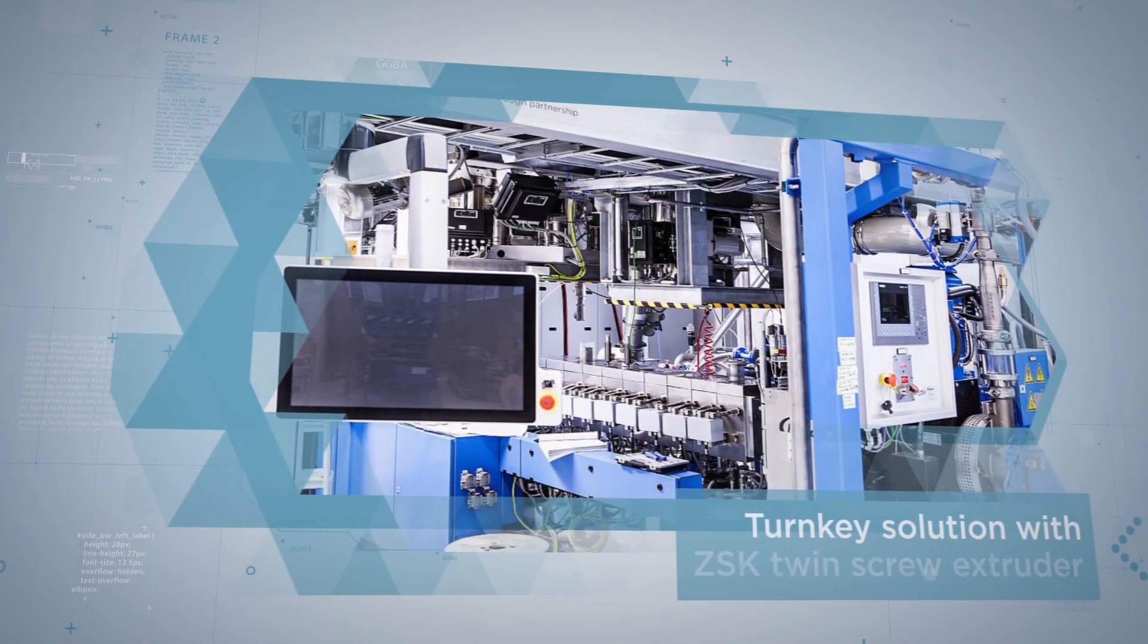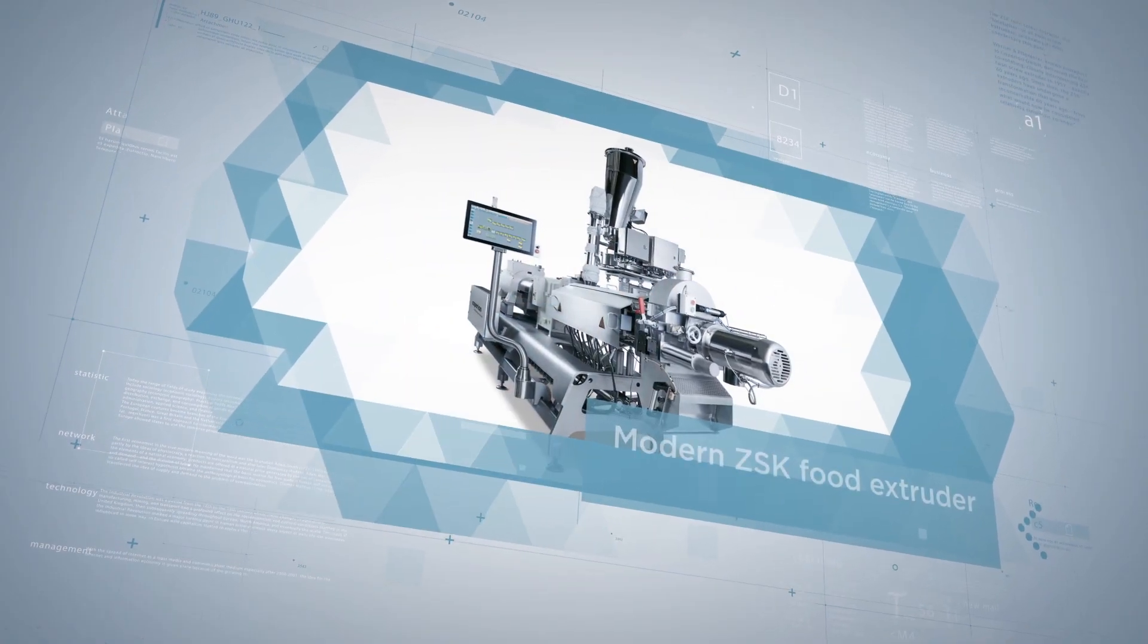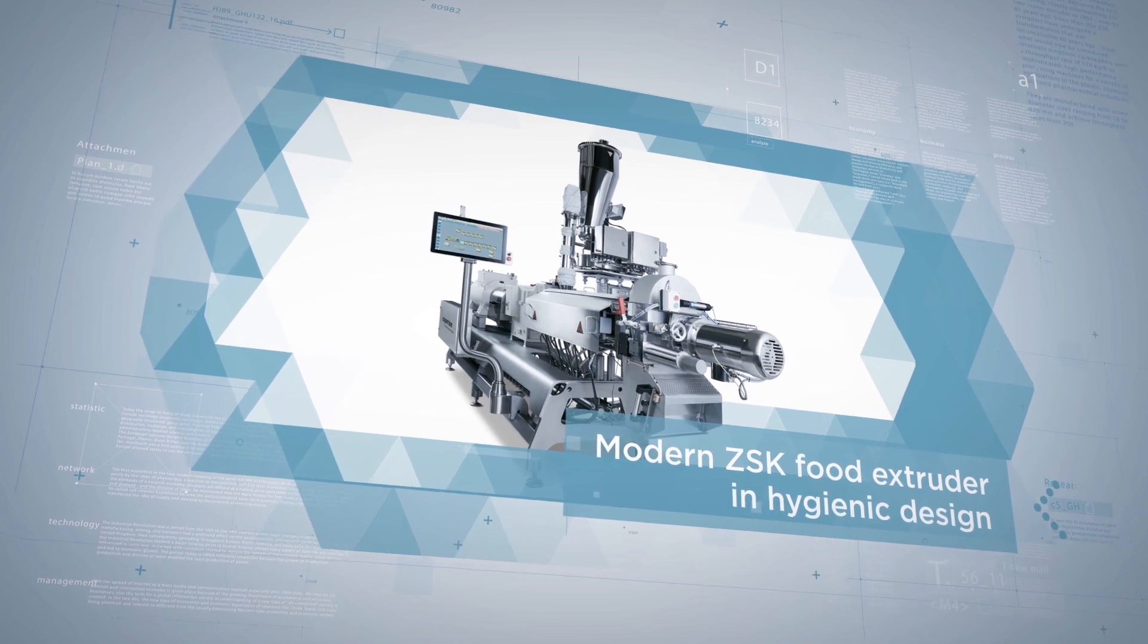Nowadays, Coperion's ZSK twin-screw extruders are manufactured in sizes ranging from 18 millimeters to 420 millimeters in screw diameter, with throughput rates of 200 grams per hour to 125 tons per hour.